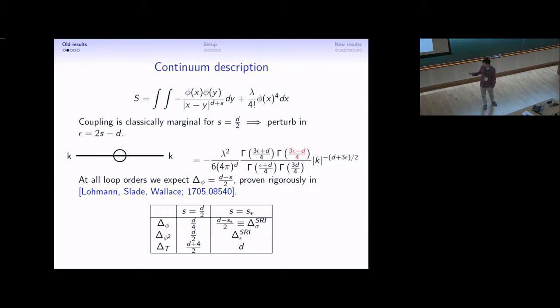Going through some primary operators, these are the scaling dimensions at the mean field theory. Then at the short range crossover, the leading spin 2 operator takes on dimension d. Phi squared takes on the dimension of the short range energy operator, and Phi takes on the dimension of the short range spin operator. Because of the normalization, this relation actually defines the value of S star.